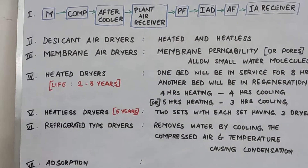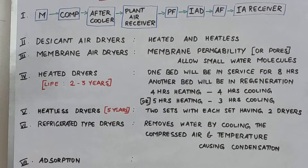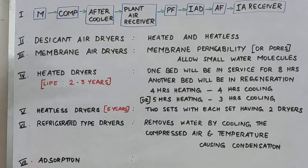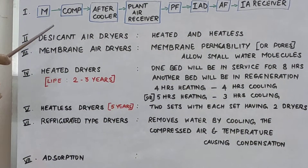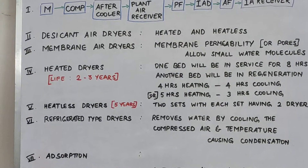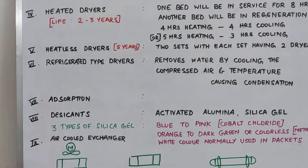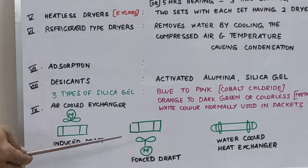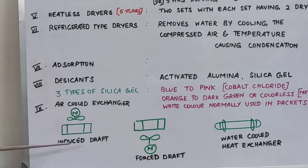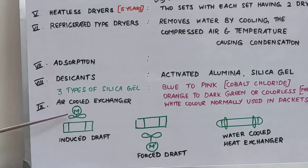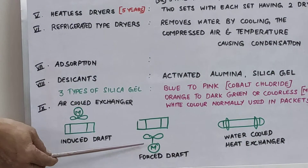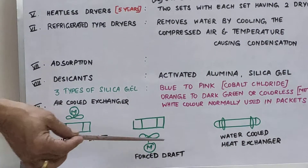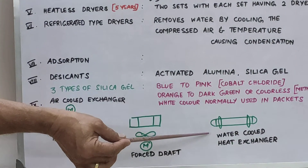The compressor is normally a reciprocating or centrifugal type, having multiple stages. In between two stages, intercoolers are present. When the compressor is used offshore or in marine applications, they use only air-cooled type. Air-cooled is of two types: one uses induced draft for cooling and another uses forced draft. The normal type uses a refrigerant agent with water as the cooling media.